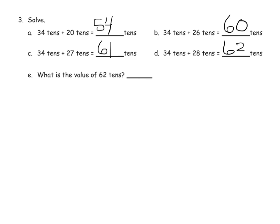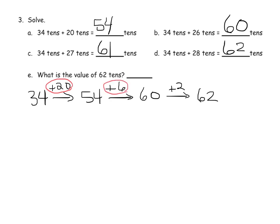Now another way that we could have modeled 34 tens plus 28 tens is using the arrow method. We could have said 34 plus 20 would give us 54. And then we could have added 6. That would give us 60. And then we could add 2 more. That gives us 62. And then sure enough, 20 plus 6 plus 8. There's our 28 that we were supposed to add.